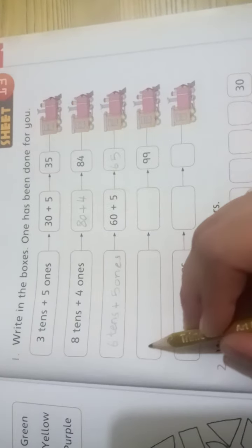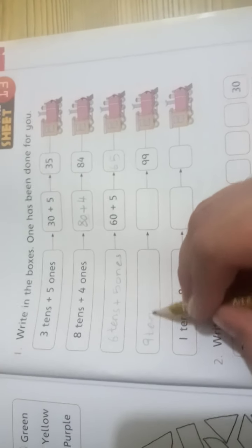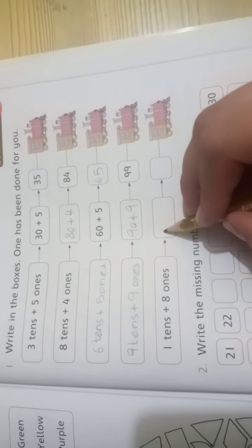99: 9 tens and 9 ones, 90 plus 9. 18: 1 ten and 8 ones, so 10 plus 8.